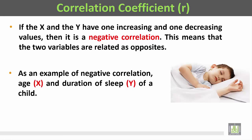An example of negative correlation is the age X and the duration of sleep Y of a child. As the child's age increases, the number of hours of sleep decreases — this is a negative (inverse) linear relationship.